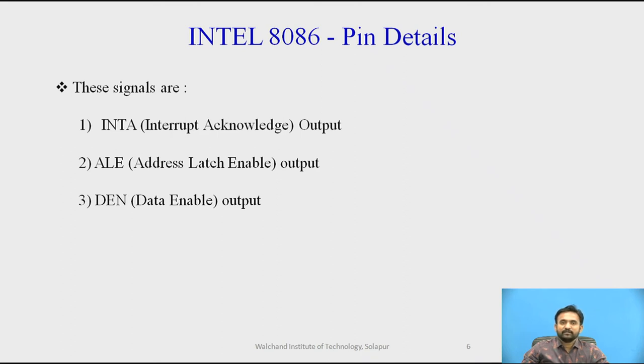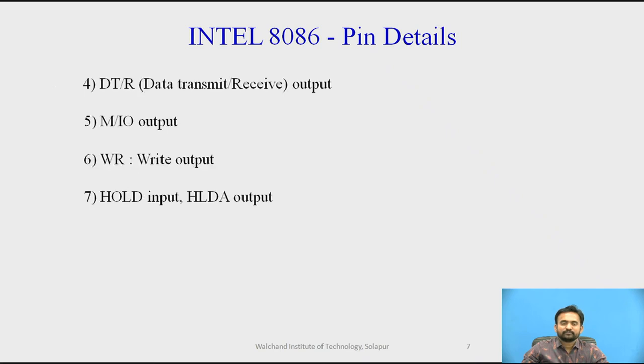The third one, DEN (data enable) output - this signal informs the transceivers that the CPU is ready to send or receive data. Next, DT/R (data transmit and receive) output - this signal is used to control data flow direction. High on this pin indicates that the 8086 is transmitting the data, and low indicates that 8086 is receiving the data.